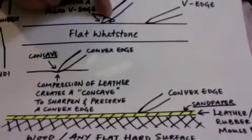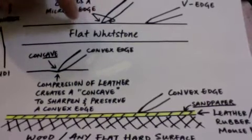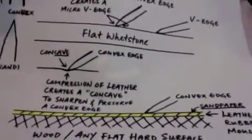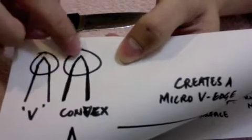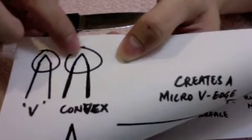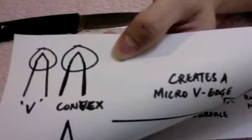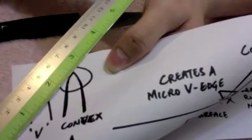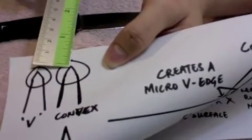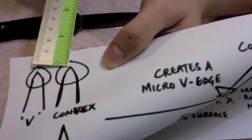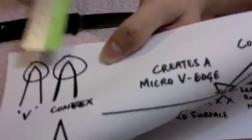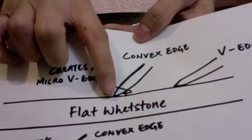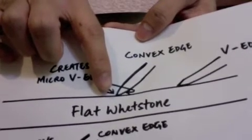However, if you do that on a convex edge, what happens is that it creates a micro V-edge on the convex edge. Remember, a convex edge is not flat on the sides, it is curved or rounded. If you apply it to a flat surface, like so, you will naturally create a micro V-edge at the very tip of the convex edge, which means you will lose the true convex at the very tip, which is actually the contact point, your very edge.